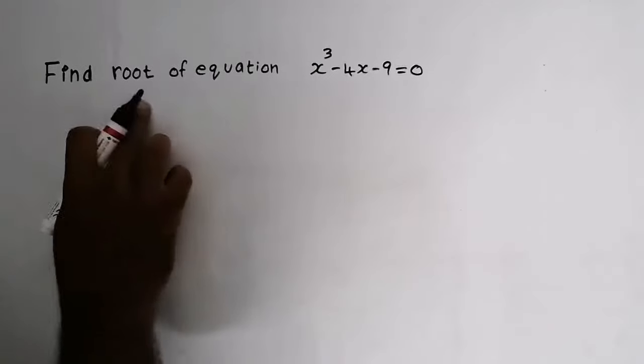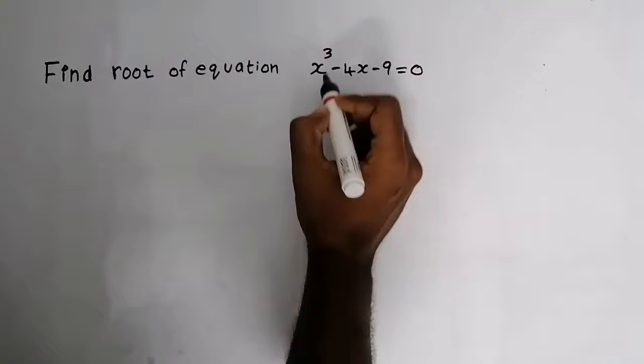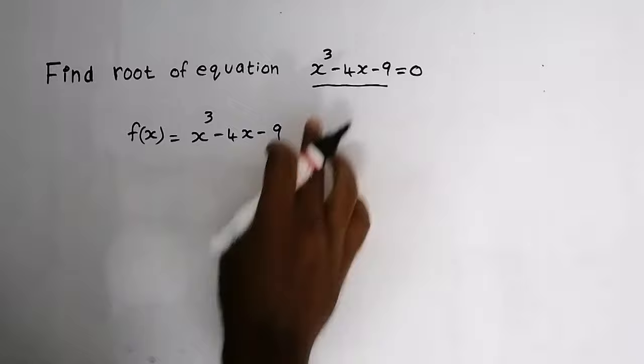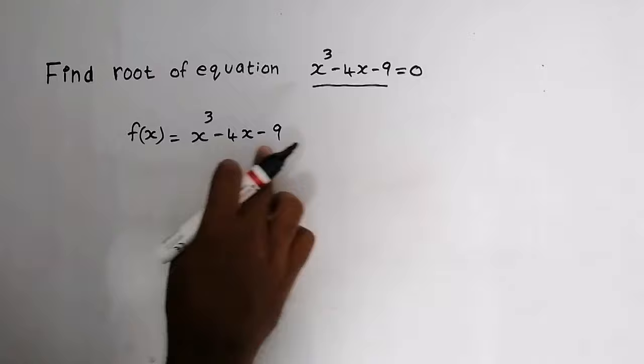Find the root of the equation x³ - 4x - 9 = 0. So our equation is f(x) = x³ - 4x - 9.